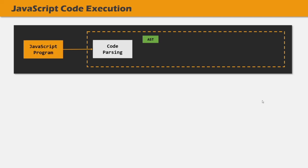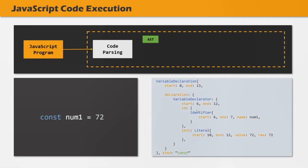For example, let's say we have a very simple program where we are declaring a variable like this — we are creating a variable num1 using the const keyword and assigning it the value 72. For this one line of code, this is the Abstract Syntax Tree, or AST, which will be generated. In this AST you can see information related to this code: there is a variable declaration with the name num1, value 72, and the type of this variable is const. There is also a lot of other information in this AST. This is just for a single line of code, so imagine what it would look like for a large real-world application.